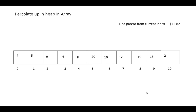The parent position of the newly added element 2 is at index (10-1)/2, which is index 4, giving value 8. Is 8 less than 2? No, it is not. So we need to swap these two elements. After swapping, we need to verify again whether 2 has reached its correct position.